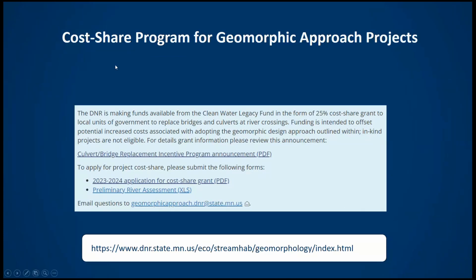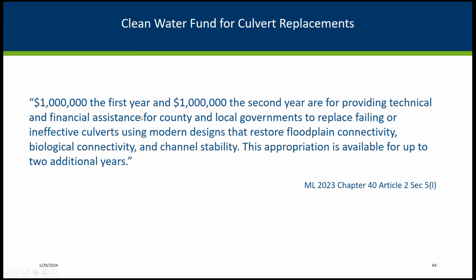Now I want to talk about the cost share program. Kevin and I started 10 years ago and it culminated into a bill that passed July 1st this year. We were excited about it. They allocated $1 million for the first year and $1 million for the second year to provide technical and financial assistance for county and local governments to replace failing or ineffective culverts using modern designs that restore floodplain connectivity, biological connectivity, and channel stability. This appropriation is available for up to two additional years. We're already getting more sites than money available, which is a really good thing.